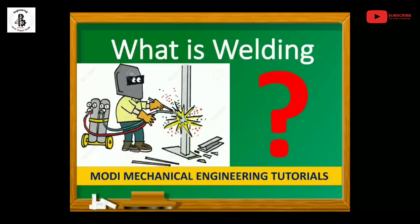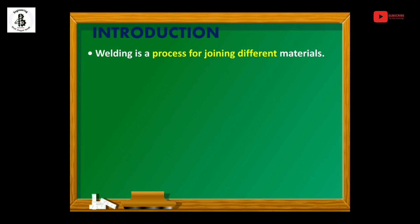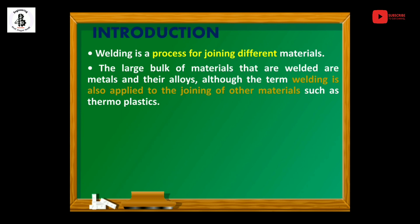Welcome to Modi Mechanical Engineering Tutorials. In this video I would like to explain the basics of metal joining process. The basic question is: what is welding? Welding is a process for joining different materials — ferrous, non-ferrous, or similar and dissimilar metals. The large bulk of materials that are welded are metals and their alloys, although the term welding is also applied to joining other materials such as thermoplastics.